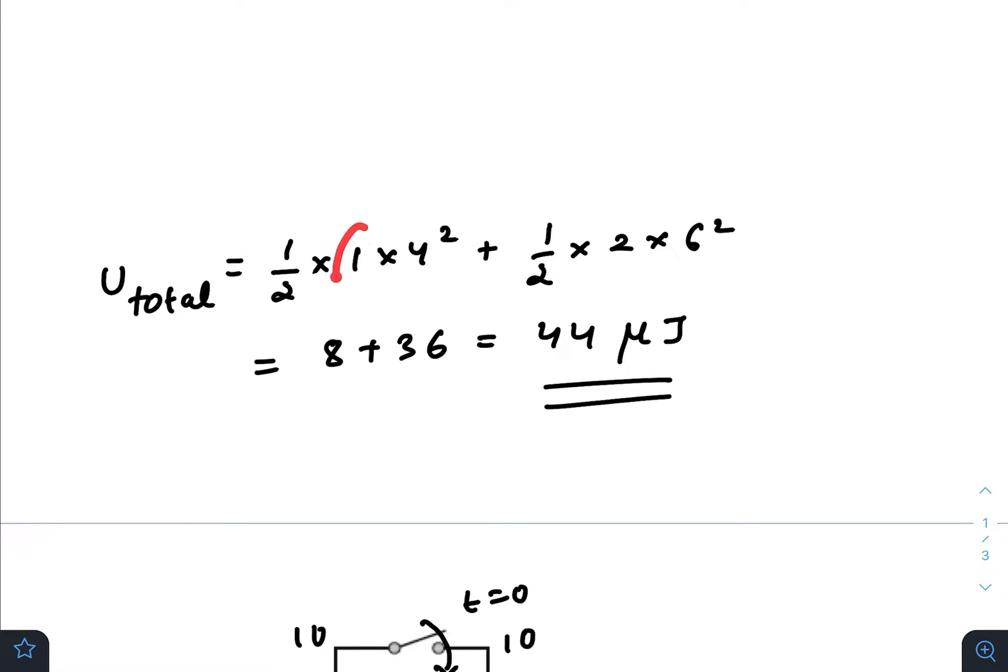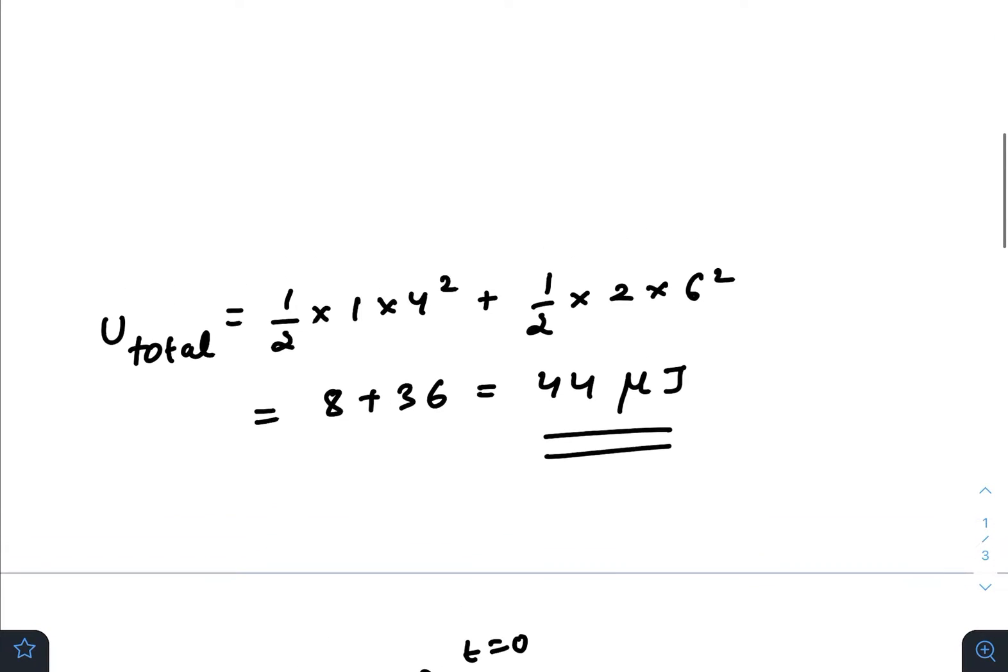The total energy will be for the first capacitor half times C times potential difference squared, plus half times 2 times 6 squared. That will give you 44 microjoules.